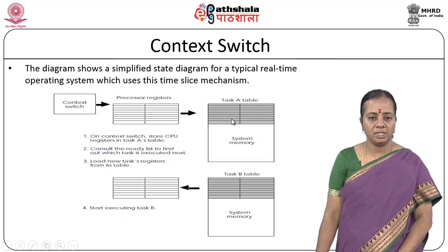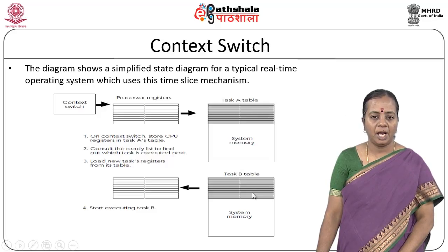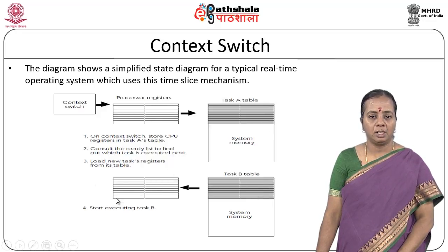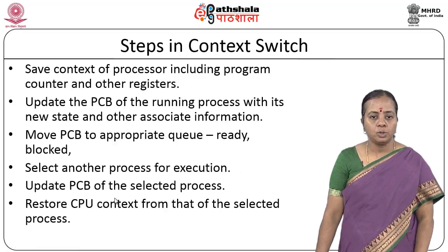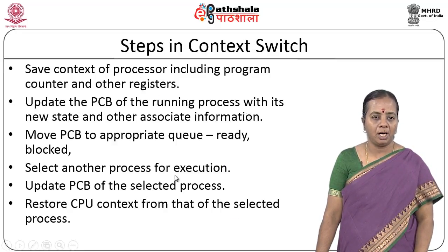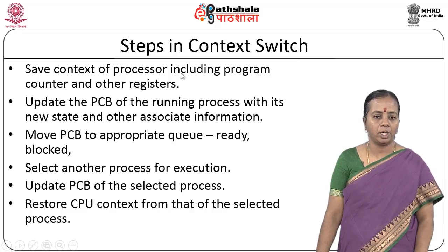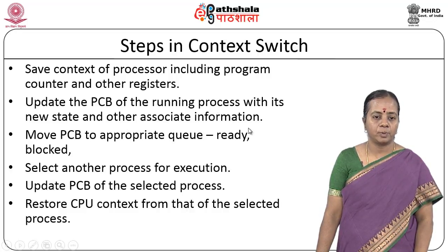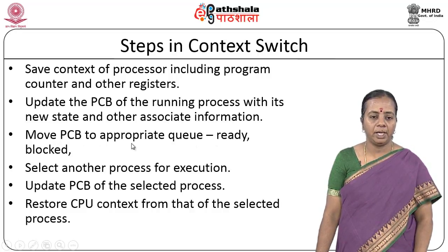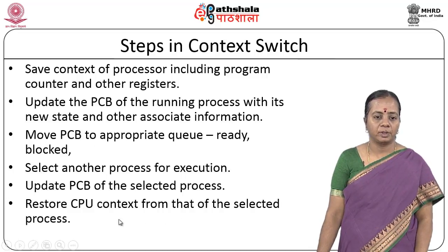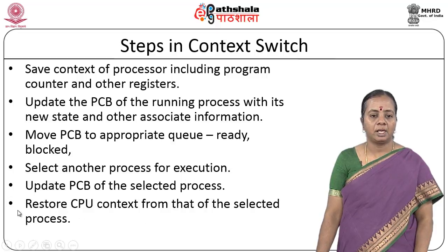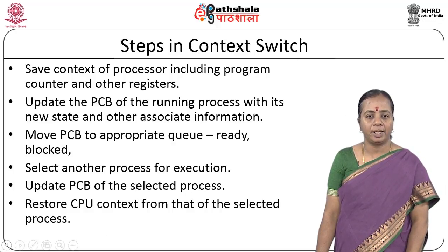The whole task B table content is transferred to the processor registers. After that, the system confirms the content is placed and it is ready to process. The CPU now runs task B. This is the way context switching occurs with respect to memory and the CPU, so that the contents of task A or task B are not disturbed and are temporarily stored in their own tables, to be reloaded when they get their time slot. The steps are: save the context of the processor including the program counter and other registers; update the PCB of the running process with its new state; move the PCB to the appropriate queue; select another process for execution; update the PCB for the selected process; and restore the CPU context from that of the selected process.